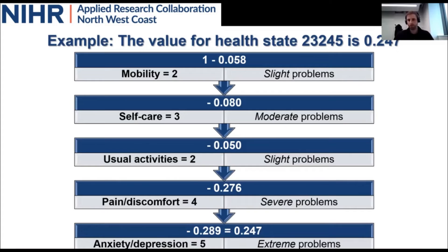Why do you ask the general population and not the patients? Because the general population funds the healthcare system through taxes. As taxpayers and contributors to the healthcare system, it is felt that the general population should have a say in this valuation process. It is possible for patients to value their own health state — there are methods and techniques which allow that — but typically it's more straightforward for researchers to look up a particular value in the national value set and incorporate it into the analysis.